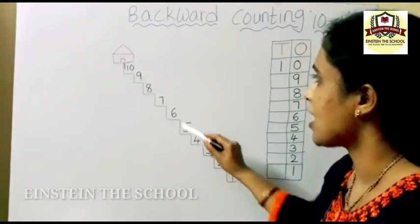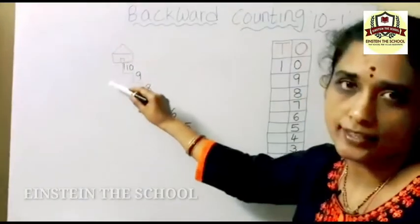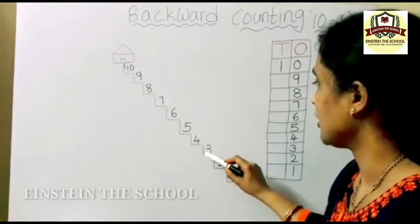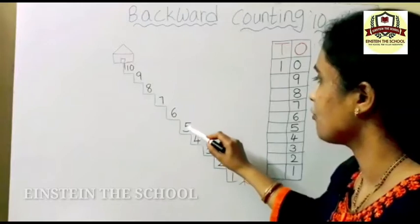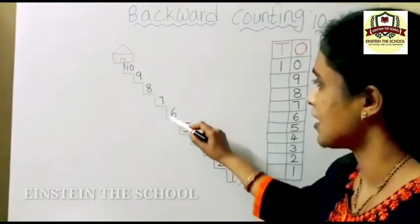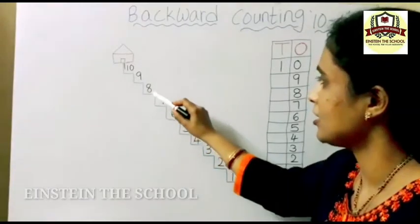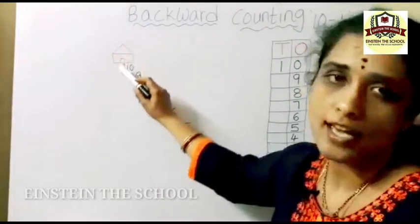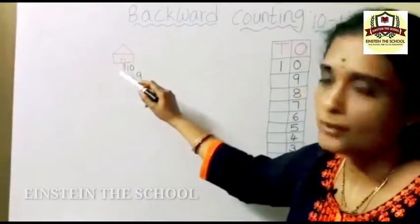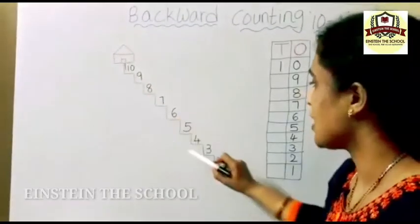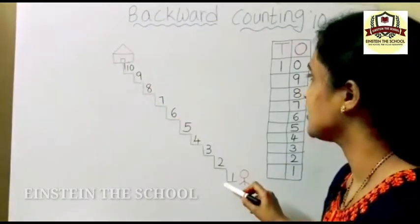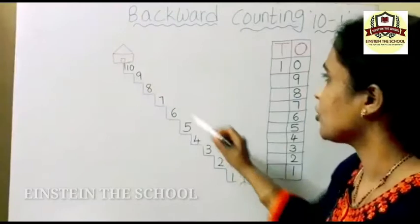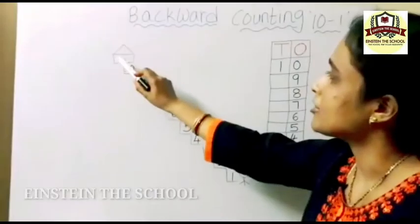On the staircase, numbers are written — see here: 1, 2, 3, 4, 5, 6, 7, 8, 9, 10. These are the numbers which are written on the staircase.